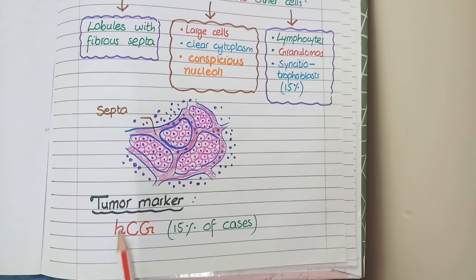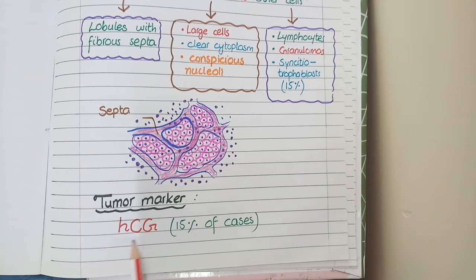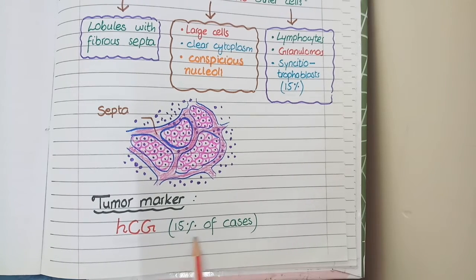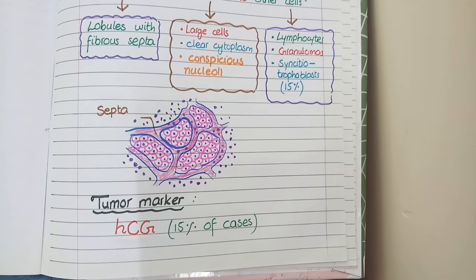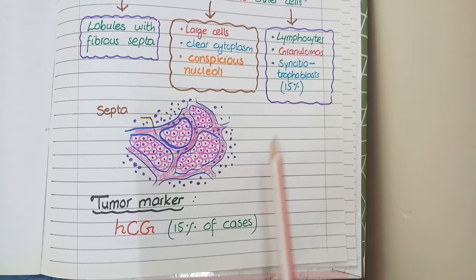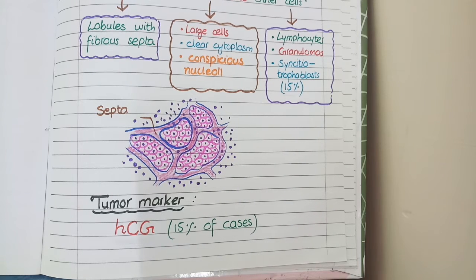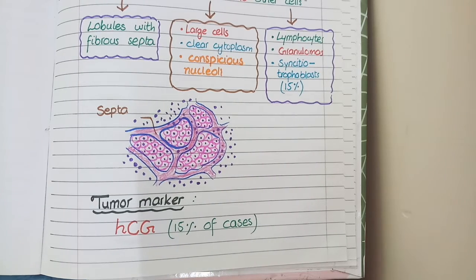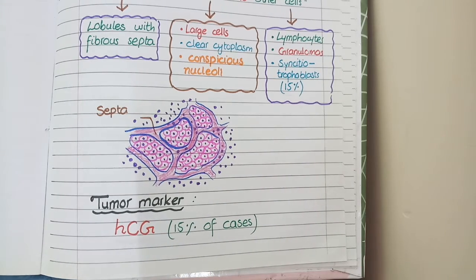The tumor marker for testicular seminomas is HCG (human chorionic gonadotrophin), but it is present in only 15% of cases. The reason is that HCG is secreted by syncytiotrophoblasts, which are present in only 15% of seminoma cases. In the rest of the cases, no tumor marker is found in testicular seminomas.